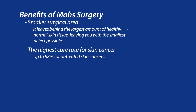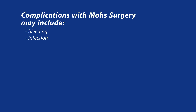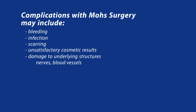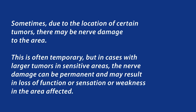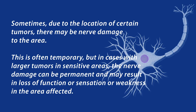The benefits of Mohs include a smaller surgical area and the highest cure rate for skin cancer. However, as with all surgical procedures, there are risks involved as well. Complications include but are not limited to bleeding, infection, scarring, unsatisfactory cosmetic results, damage to underlying structures such as nerves and blood vessels, and recurrence of skin cancer in this location. Sometimes, due to the location of certain tumors, there may be nerve damage to the area. This is often temporary, but in cases with larger tumors in sensitive areas, the nerve damage can be permanent and may result in loss of function, sensation, or weakness in the affected area.